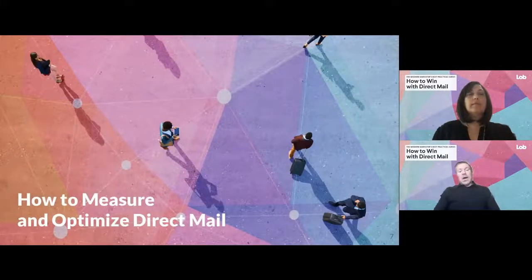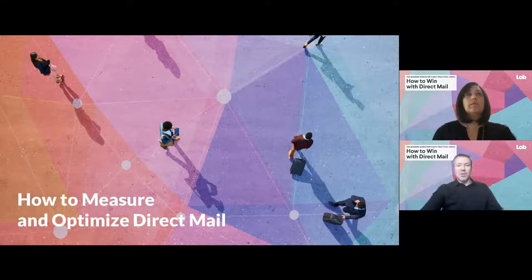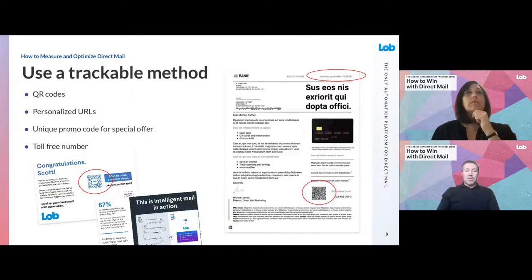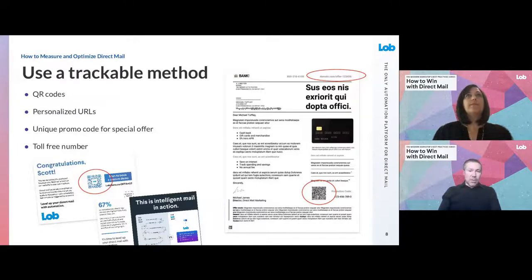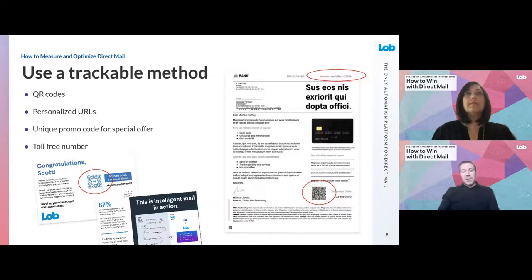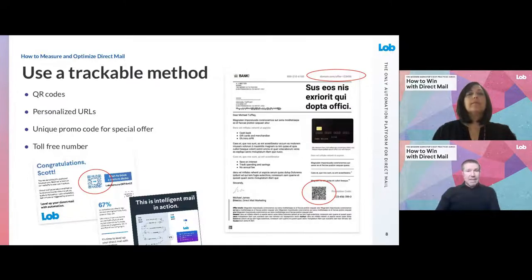So how do we actually go about optimizing and measuring direct mail? First and foremost, we want to use a trackable method. The most common things people use today are QR codes or a vanity URL, but those can only provide a certain resolution of information if customers scan the code or enter the URL. Sometimes they'll just go straight to Google and do a search — now it shows up under a totally irrelevant attribution metric, even though direct mail may have been what guided them there.